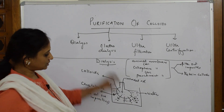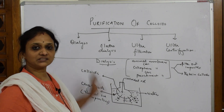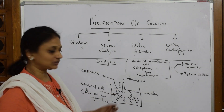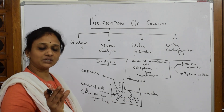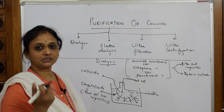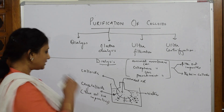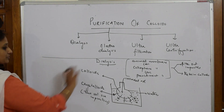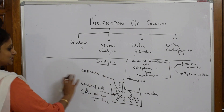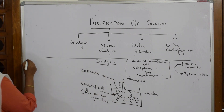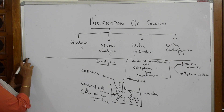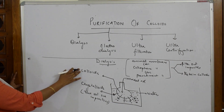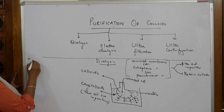What is left inside after dialysis? You are left with colloids that are retained inside. With continuous or persistent dialysis, these colloids form aggregates and you get the pure form of the colloids.